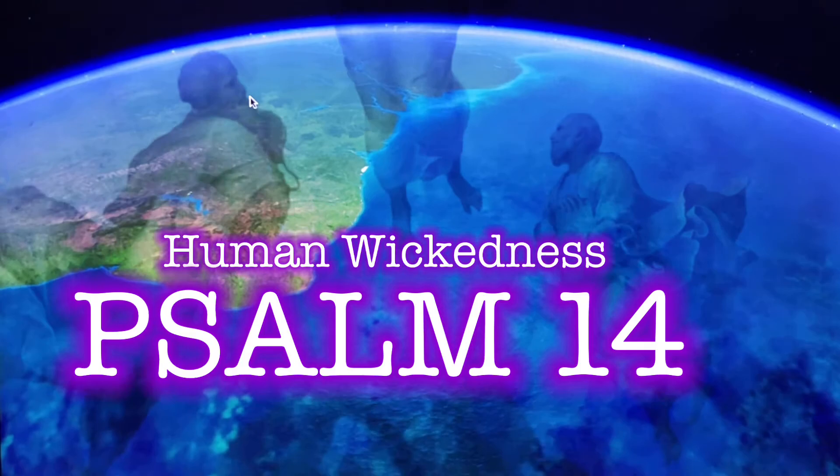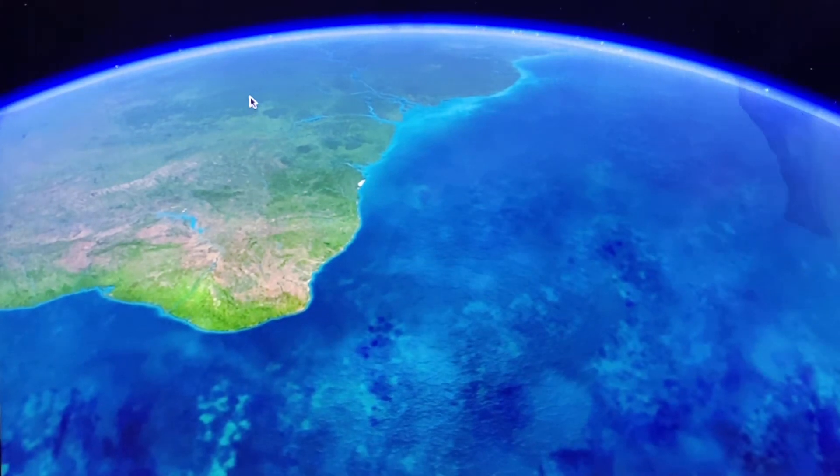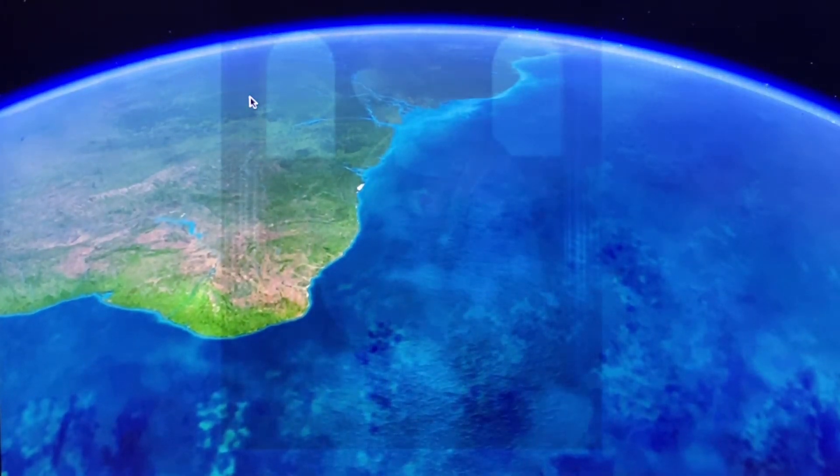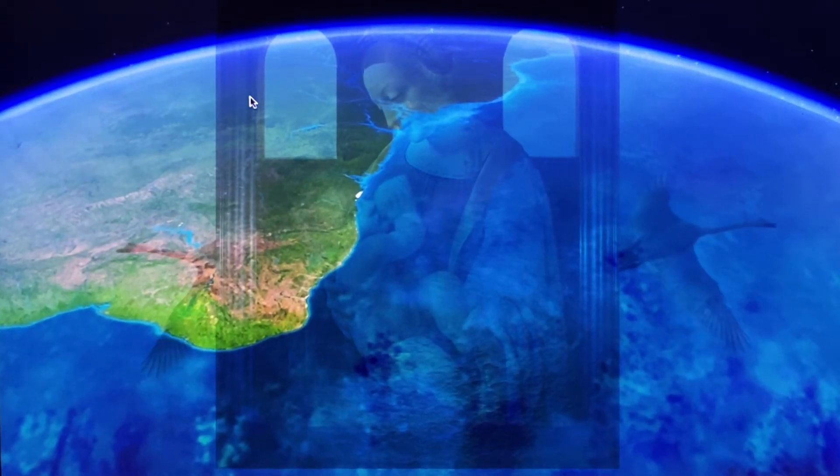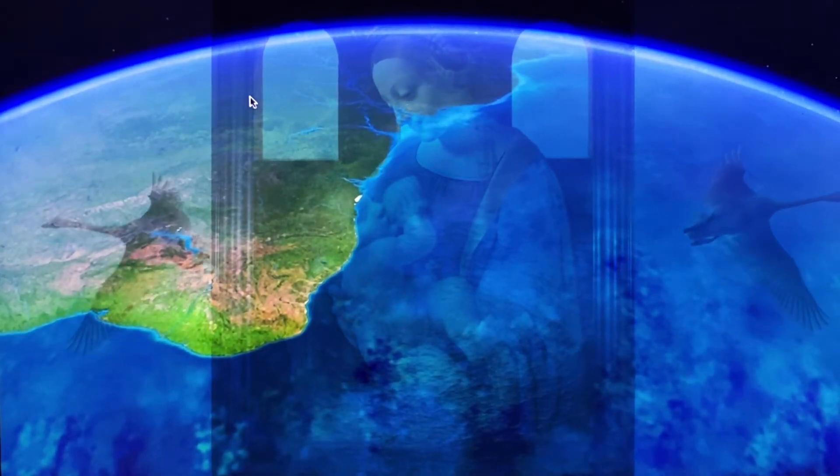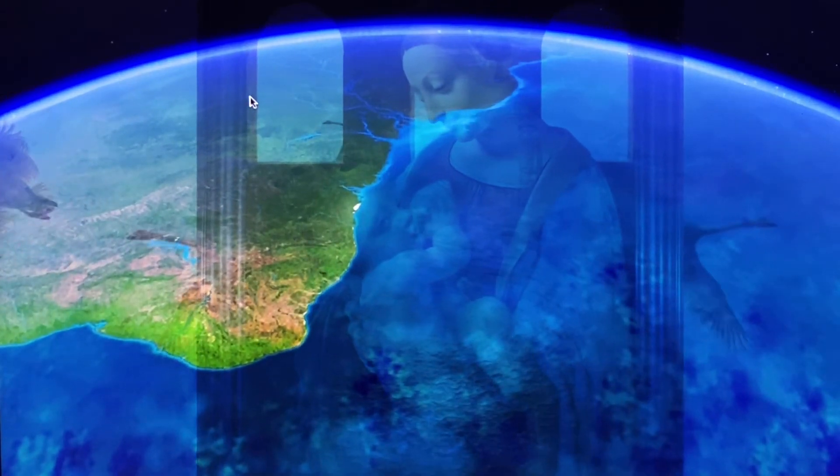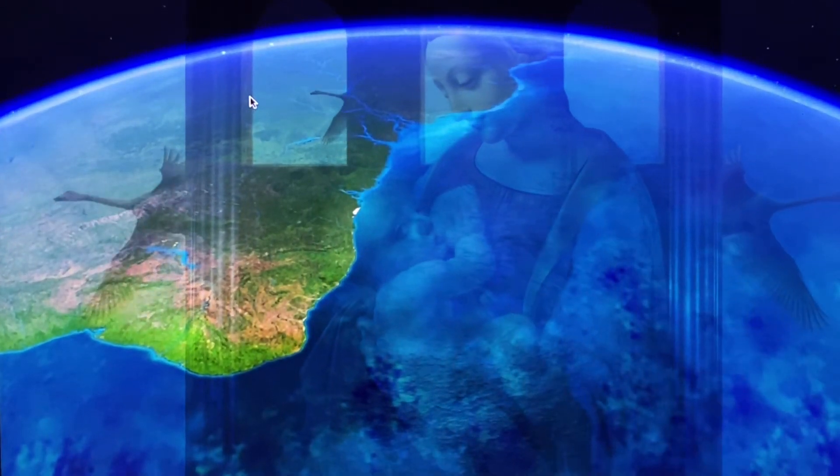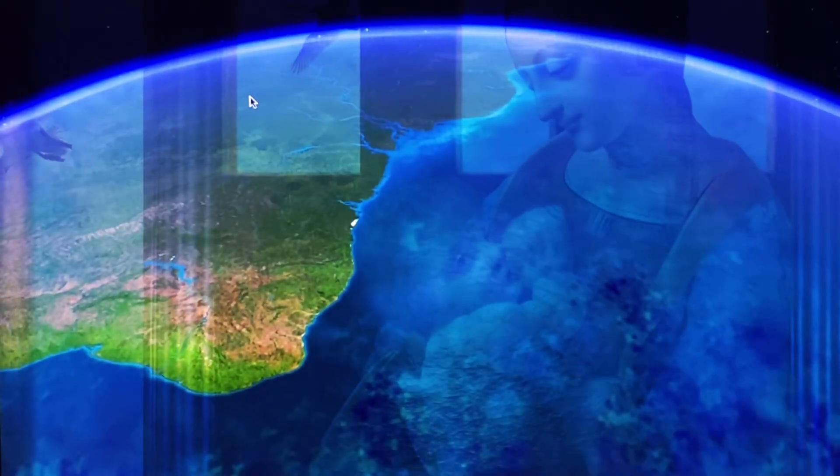Human wickedness. Fools say to themselves there is no God. They are all corrupt and have done terrible things. There is no one who does what is right. The Lord looks down from heaven at human beings to see if there are any who are wise, any who worship him. But they have all gone wrong. They are all equally bad. Not one of them does what is right. Not a single one.